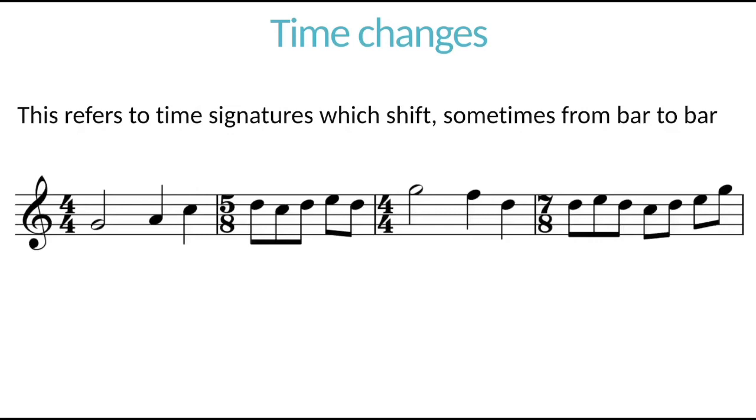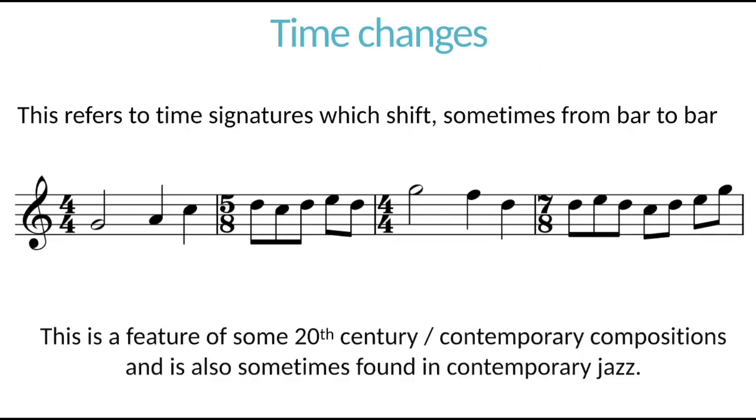Time changes refers to time signatures which shift sometimes from bar to bar. If we look at this music here, for example, it starts off in 4-4. Changes to 5-8. Five quaver notes in a bar. Back to 4-4. Changes to 7-8. Seven quaver notes in a bar. So these changing, shifting time signatures we call time changes.